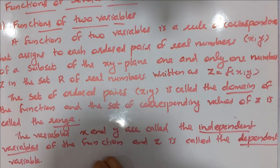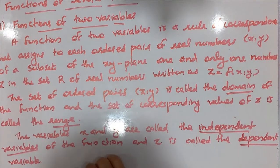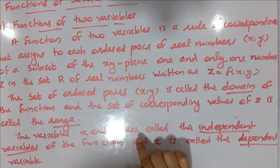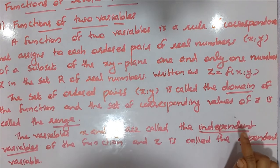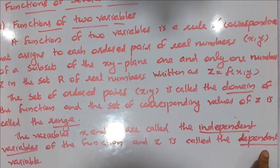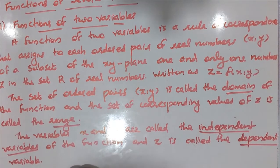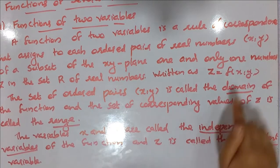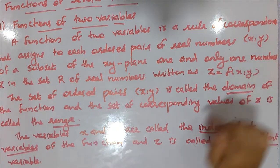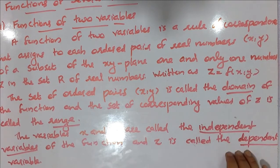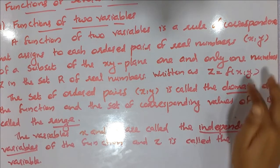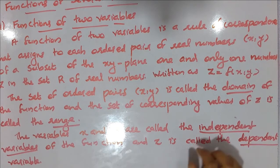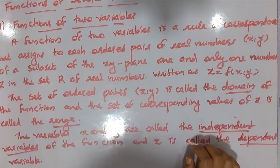x and y are called independent variables of the function, and z is called the dependent variable. If you want to know the z value, x and y are the independent variables — that means z is the dependent variable.